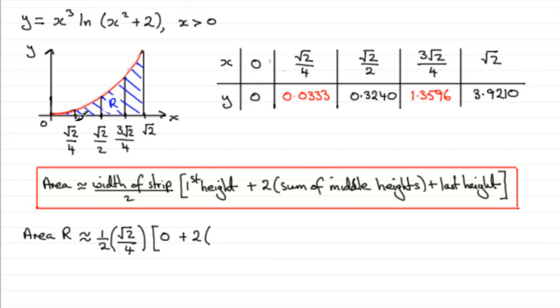So the middle heights will be this one plus this one plus this one, which are these three results in the table. So we've got 0.0333 plus 0.3240 and plus 1.3596.